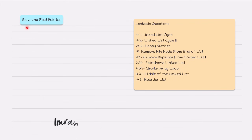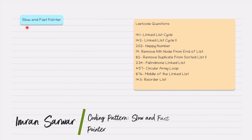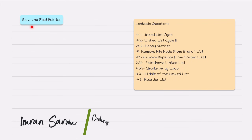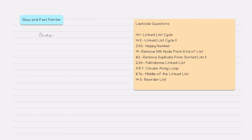Today we are going to talk about another coding pattern: slow and fast pointer. It is very interesting and is also called the tortoise and hare problem. It is also called Floyd's cycle detection algorithm.